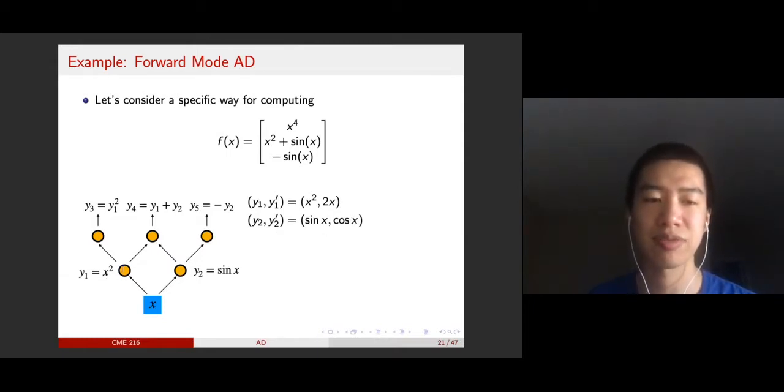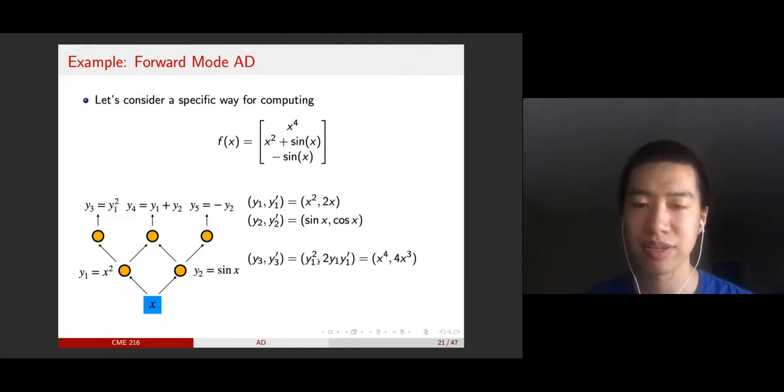The next step is to propagate the gradients to downstreams. For x₃, it calculates the value x₁², which is x to the fourth power. You also compute the gradient x₃', which is x₁' times 2y₁. At this point, you can evaluate these values. This is what symbolic differentiation would do—expand this expression to 4x³. But in automatic differentiation, because y₁' is already known, it plugs in the values and evaluates directly.